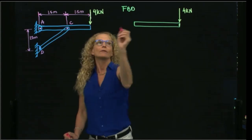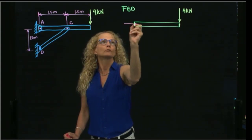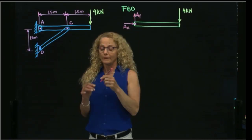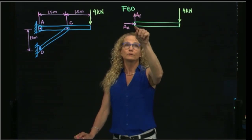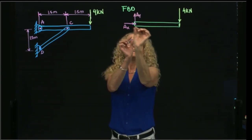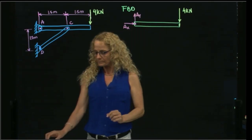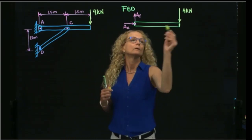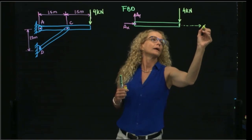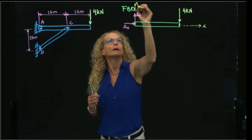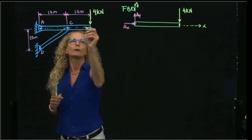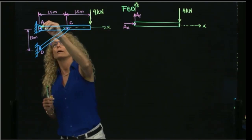At A, I have a pin. Therefore, I have two reactions, AX and AY. I don't know if these reactions are going to be positive or negative because a pin can act in either direction. And, of course, I'm using X and Y as my coordinate system. So it's X over here and Y over here.